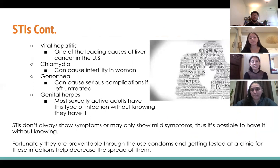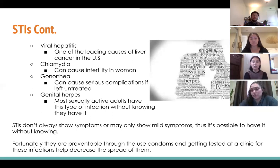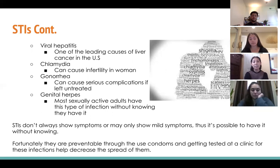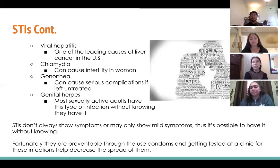Other types of STIs include viral hepatitis, one of the leading causes of liver cancer in the U.S.; chlamydia, which can cause infertility in men; gonorrhea, which can cause serious complications if left untreated; and genital herpes, which many sexually active adults have without knowing. STIs don't always have symptoms. Fortunately, these are preventable through condom use, and getting tested at a clinic can help decrease the rate of spreading.